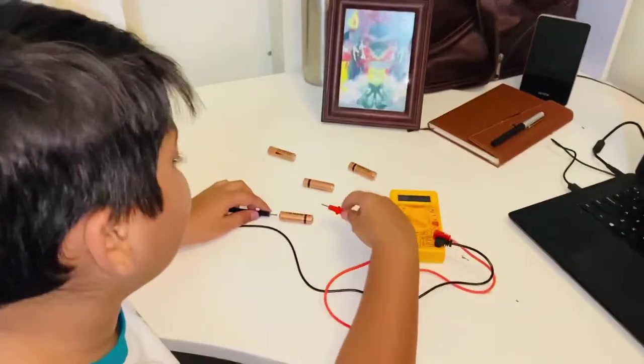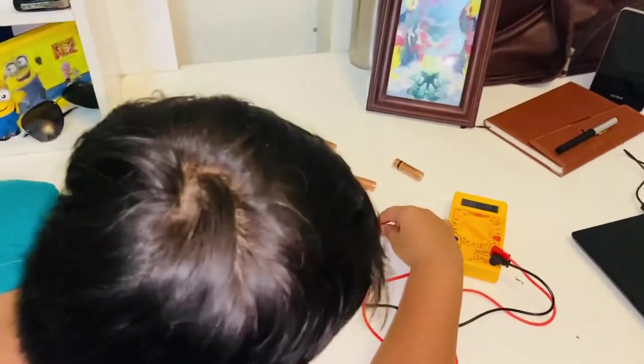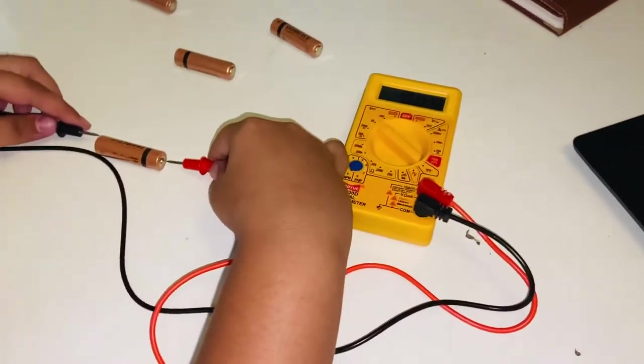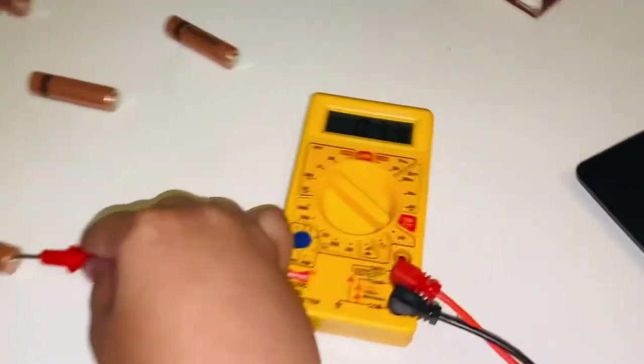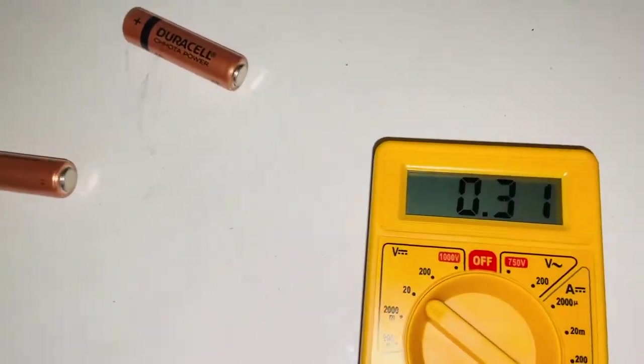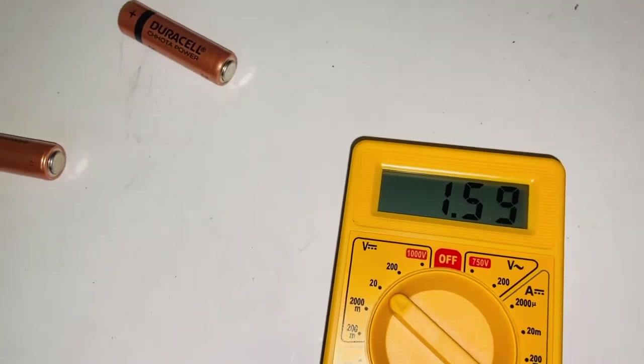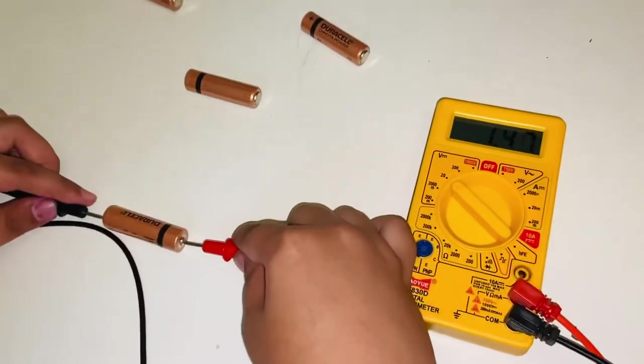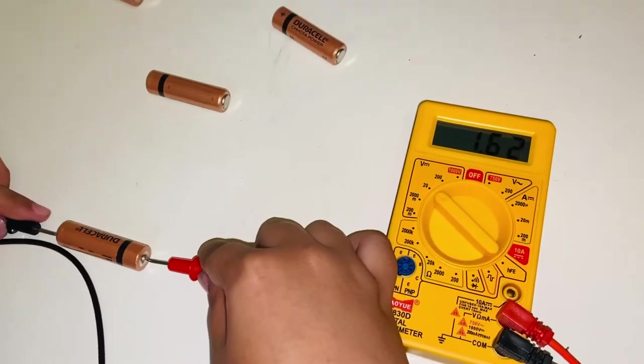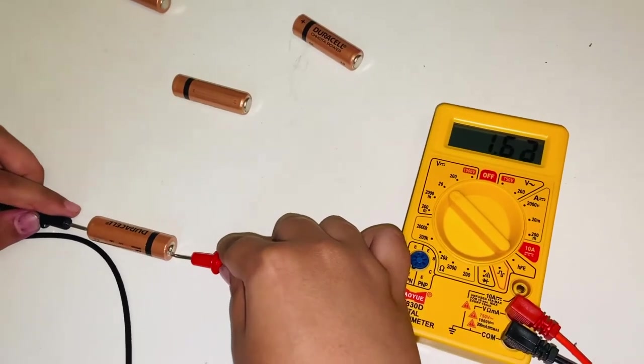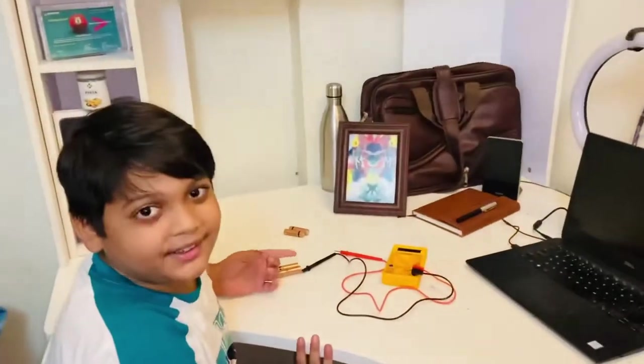Next, we are going to measure it. Black is negative and red is positive. So now if we do like this, you can see the voltage in the multimeter. For this battery, it is 1.63 volts.